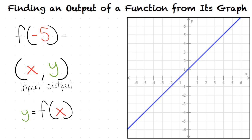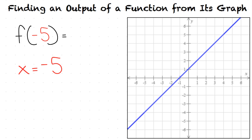In the case of our problem, x equals negative 5, so we need to find the y coordinate that corresponds with our x coordinate of negative 5. Now we look at our graph. We can draw a graph that represents x equals negative 5.